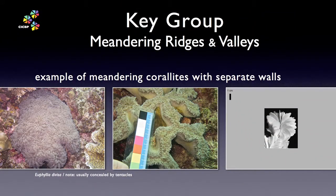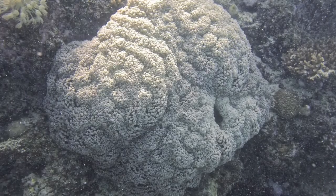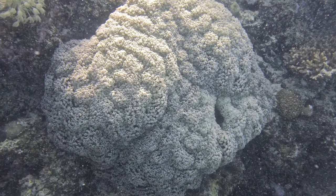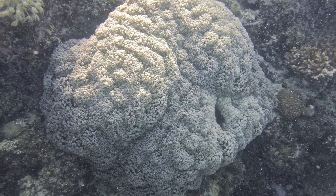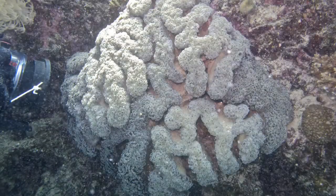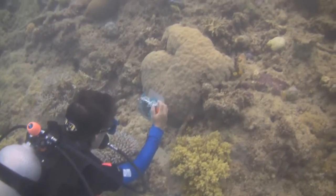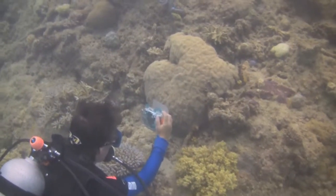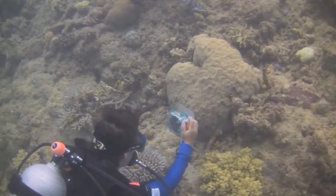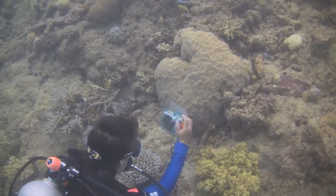Now we can see a coral with widely separated walls. Look closely at this image. It is very easy to swim past this beautiful colony with its polyps extended and not know it had coralites with separated walls. You can see why familiarity and time underwater plays an important role in getting good at coral identification.